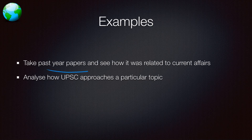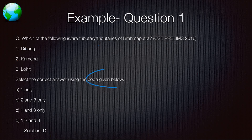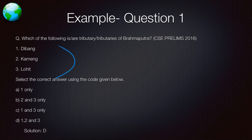Now let's look at past year papers and see how they relate to current affairs, so you have a better understanding of what kind of questions are asked. For example, one question asks which of the following are tributaries of the Brahmaputra — Debang, Manas, or Lohit. The answer is all of them. Lohit is definitely a tributary since it is a district in Arunachal Pradesh and the Brahmaputra flows through that region.